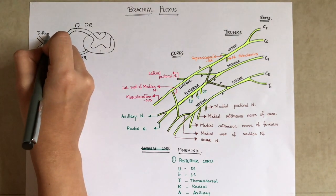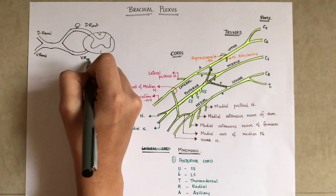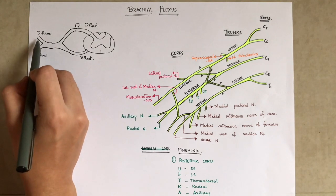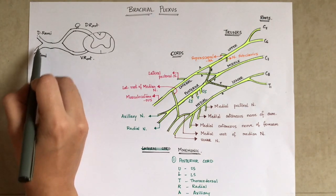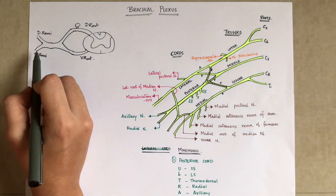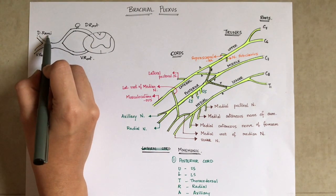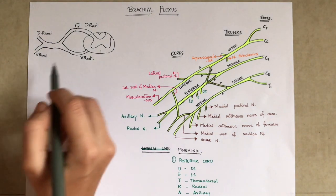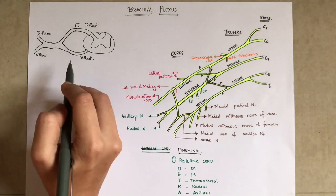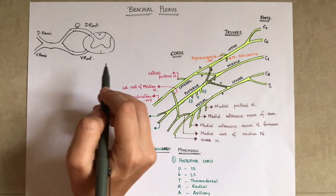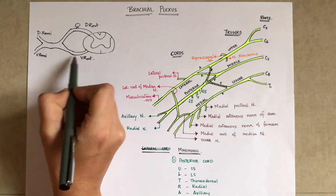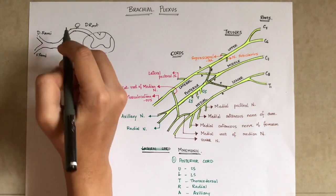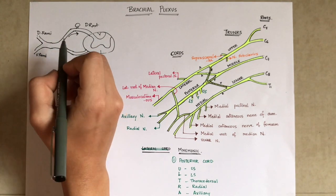The trunk of the spinal nerve later divides into dorsal rami and the ventral rami. What is the difference between root and rami? In rami, we have both sensory and motor fibers in each of the rami — that is, in dorsal rami we have both sensory and motor fibers, and in the ventral rami we also have both sensory and motor fibers. But when talking about the root, it either has sensory fibers or motor fibers.